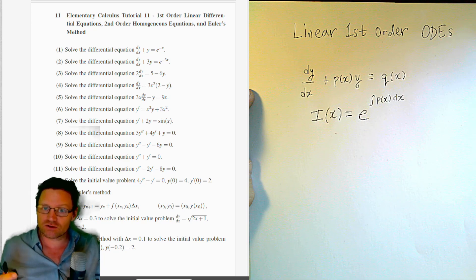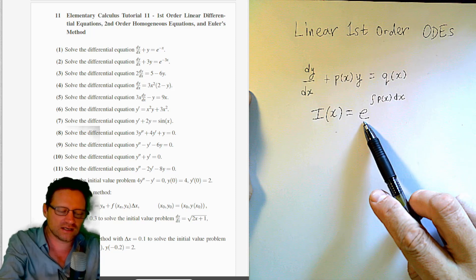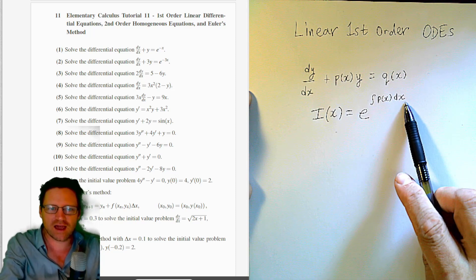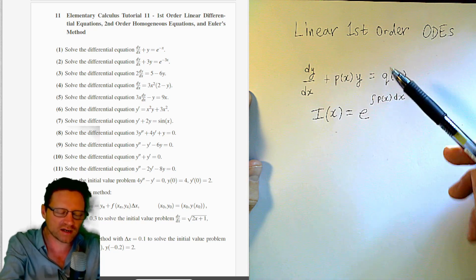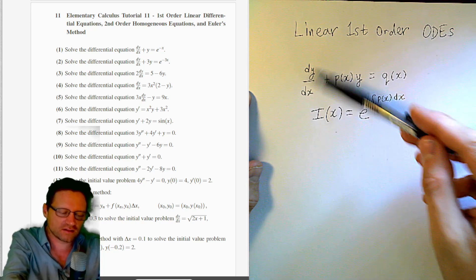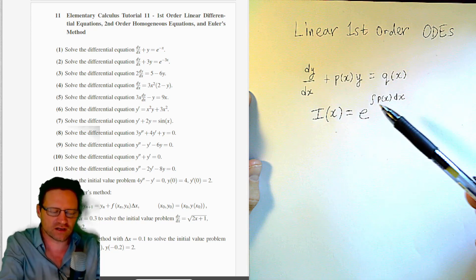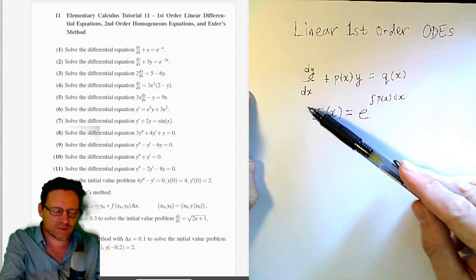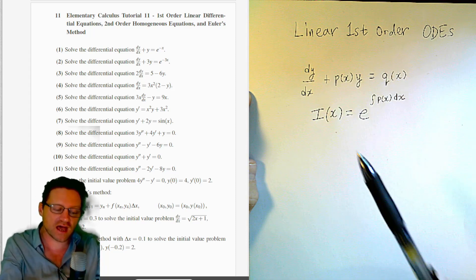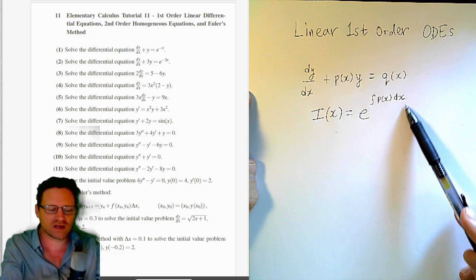The first thing we do is introduce an integrating factor: I of x is e to the power of the integral of p of x with respect to x. But the equation first has to be in this form — you need the first derivative and a function of the independent variable times y on the left-hand side. Once you have that, you introduce the integrating factor e to the integral of p(x) dx.